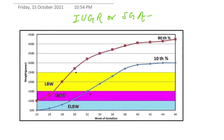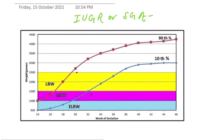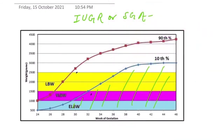We call a baby small if the abdominal circumference (AC) or the estimated fetal weight (EFW) is less than the 10th percentile. To determine this, we plot the AC or EFW on the chart that the ultrasound machine generates automatically. When the value falls below the 10th percentile, the baby is considered small. For example, if the fetal weight is 1500 grams at 36 weeks of gestation, and that plots below the 10th percentile, the baby is small.